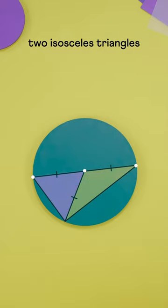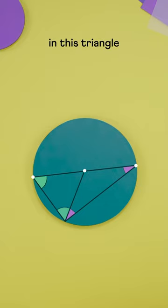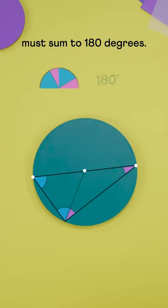So we get these two isosceles triangles with these pairs of equal angles. Now all these angles in this triangle must sum to 180 degrees. So this angle must be 90 degrees.